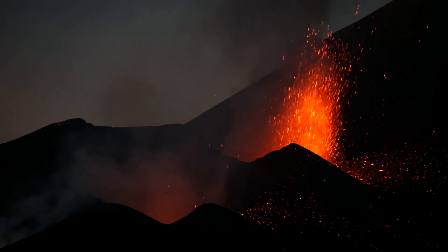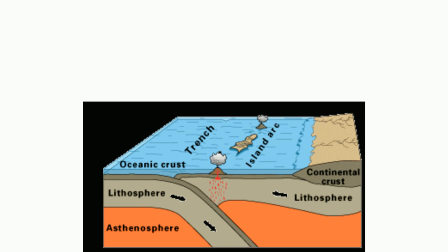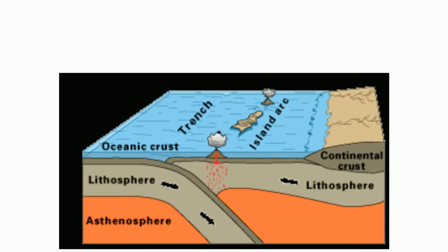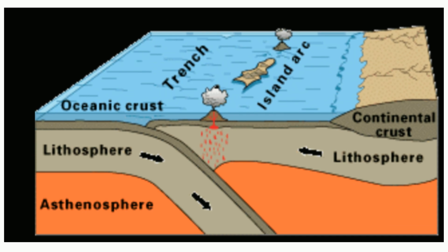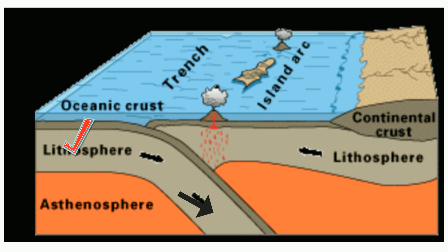Ocean to ocean collisions occur when two plates of oceanic crust collide. The older, more dense plate subducts under the younger plate. As a result, the crust melts and creates an island arc.